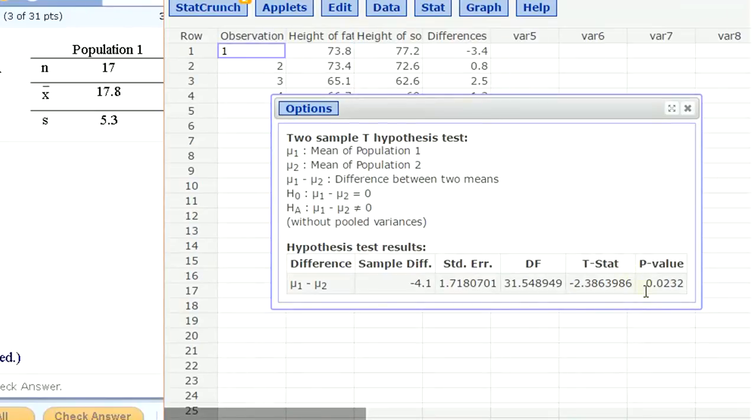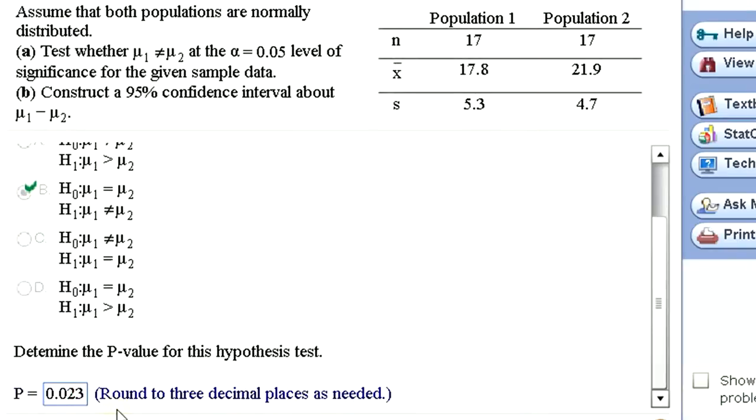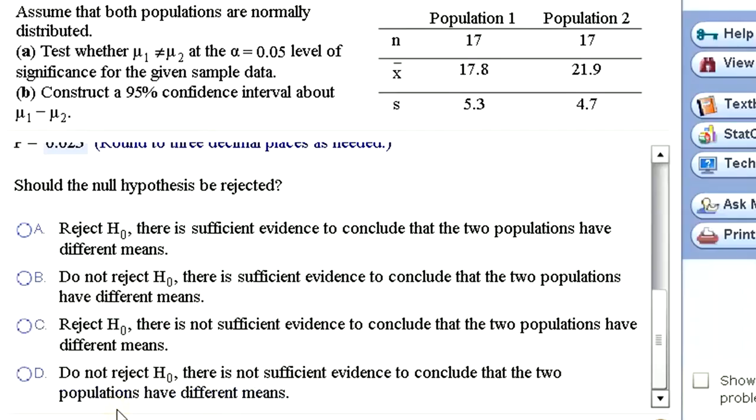So let's move this over a bit. The p value is right here, three decimal places. I will just copy it over, 0.023. That's pretty low. It's lower than 0.05. So we would reject the null hypothesis. There is sufficient evidence to conclude the two populations have different means.